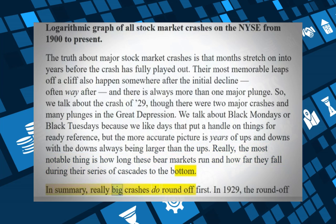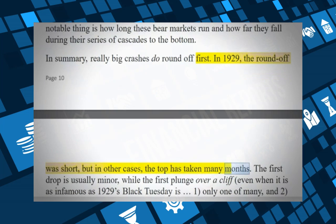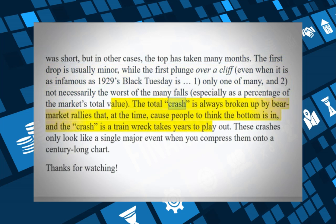In summary, really big crashes do round off first. In 1929 the round-off was short, but in other cases the top has taken many months. The first drop is usually minor, while the first plunge over a cliff — even when it is as infamous as Black Tuesday — is only one of many, and not necessarily the worst of the many falls, especially as a percentage of the market's total value. The total crash is always broken up by bear market rallies that, at the time, cause people to think the worst is over.